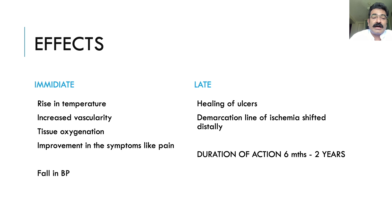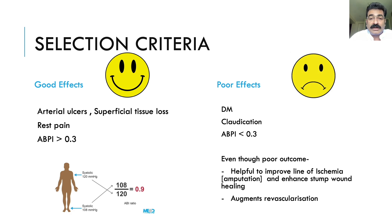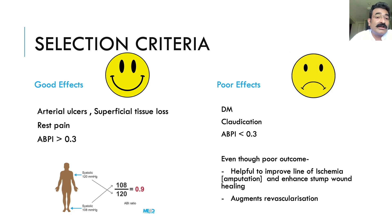Not every patient responds equally — there are no 100% results. Good effects are observed in patients with arterial ulcers and superficial tissue loss, as blood flow increases more in superficial areas. Rest pain responds very well rather than claudication. The ankle-brachial pressure index (ABI): if the ratio of ankle systolic pressure to brachial systolic pressure is more than 0.3 to 0.35, indicating some residual circulation, these patients respond very well. Patients with ABI less than 0.3, claudication, or diabetes mellitus respond less favorably.